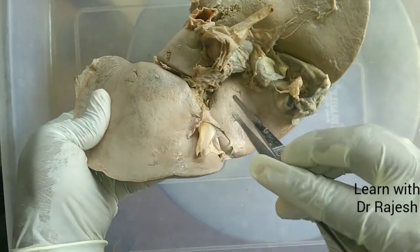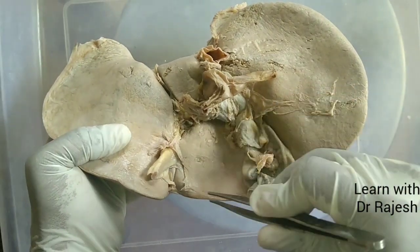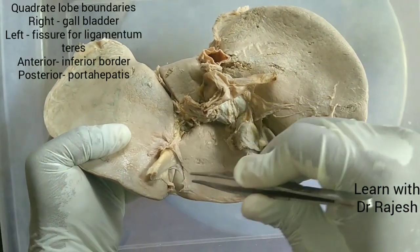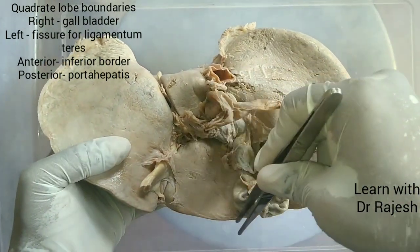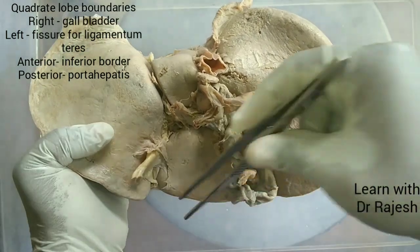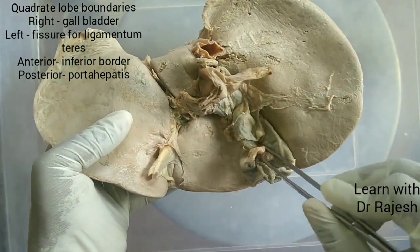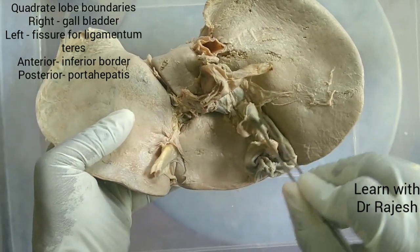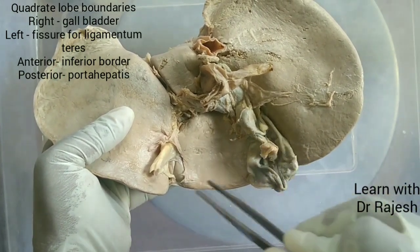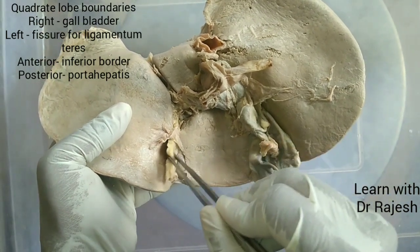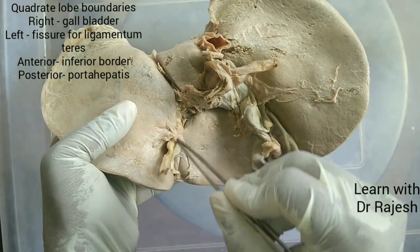The boundaries of the quadrate lobe are: anteriorly bounded by the inferior border of the liver, to the right bounded by the gallbladder and the fossa of the gallbladder, and to the left bounded by the fissure for the ligamentum teres.